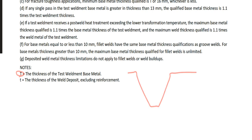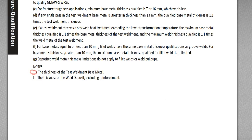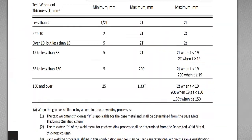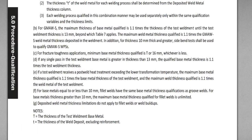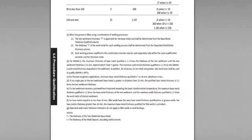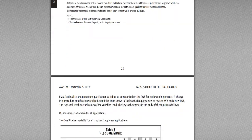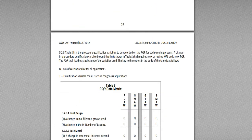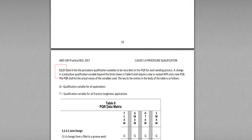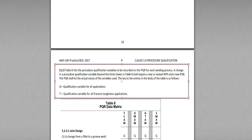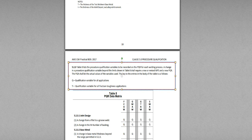This large T is base metal thickness and small t is weld metal thickness. This was Table 7 notes A through G. I'm going to stop here today and the next lecture will start from section 5.2.3. Thank you for listening and I will see you next time.